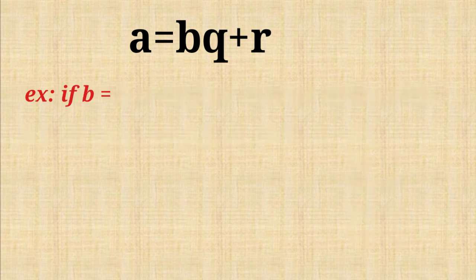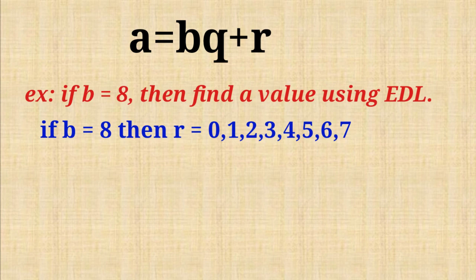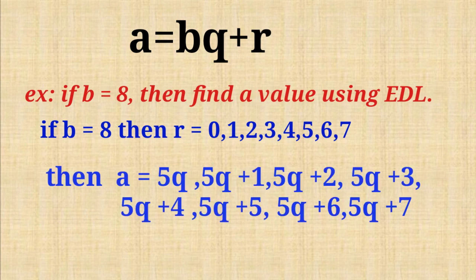Second example: If B equals 8, then find A value using EDL. If B equals 8, remainder R value is less than 8. So R equals 0 to 7. Then A equals 8Q or 8Q plus 1 to 8Q plus 7.